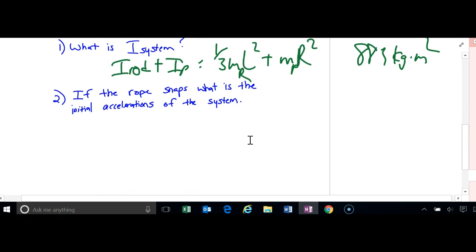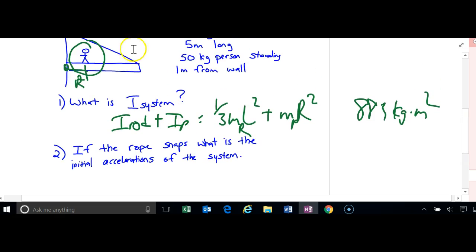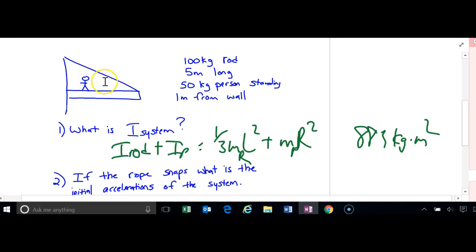Now this problem says you may only see part two. If the rope snaps, what is the initial acceleration of the problem? Well, if the rope snaps, what forces are present? Let's go back and look at this as a free body diagram. We'll ignore the rope.